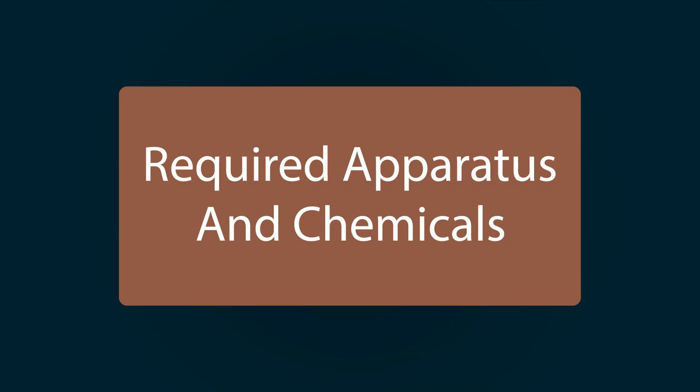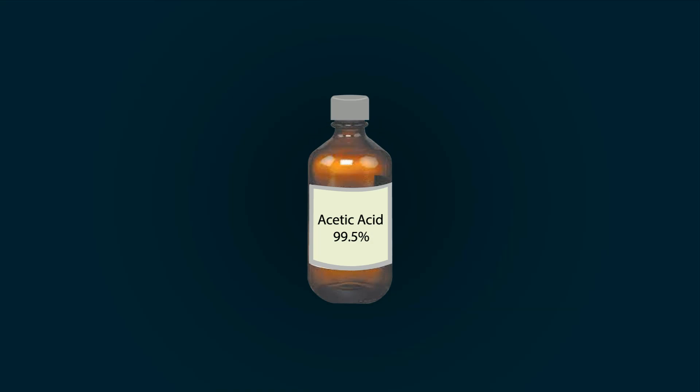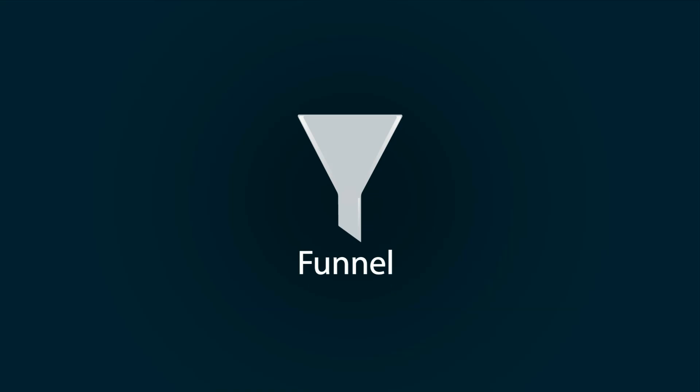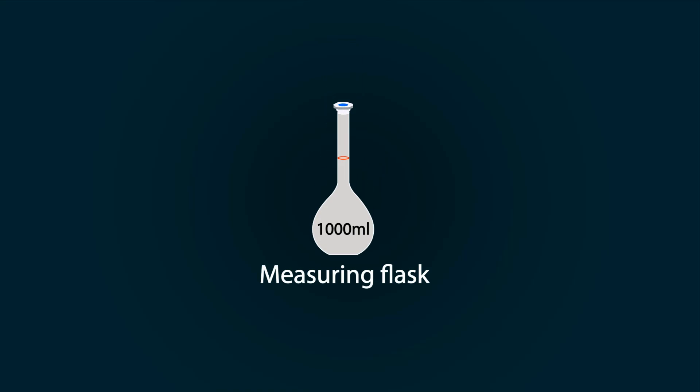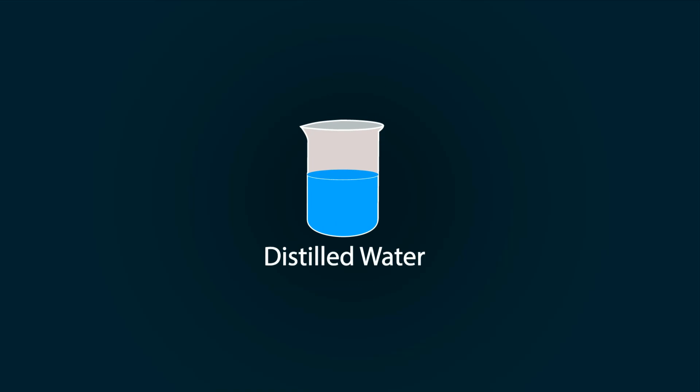Required apparatus and chemicals include acetic acid of 99.5%, a funnel, one pipette, measuring flask of 1000 milliliters, distilled water in a beaker, and a storage bottle.